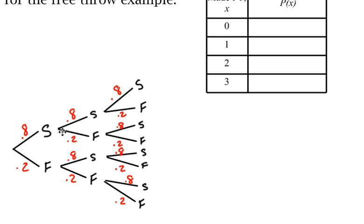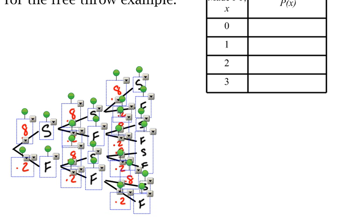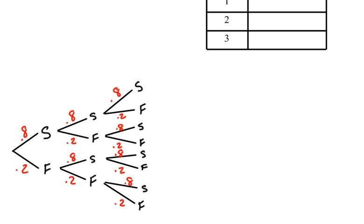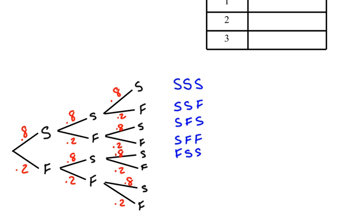So how many different outcomes do I have? There are 8 outcomes: success-success-success, success-success-failure, success-failure-success, success-failure-failure, failure-success-success, failure-success-failure, failure-failure-success, and failure-failure-failure. That covers all possibilities — she makes all three, makes the first two and misses the last, make-miss-make, make-miss-miss, miss and two makes, miss-make-miss, two misses followed by a make, and finally she misses all three.